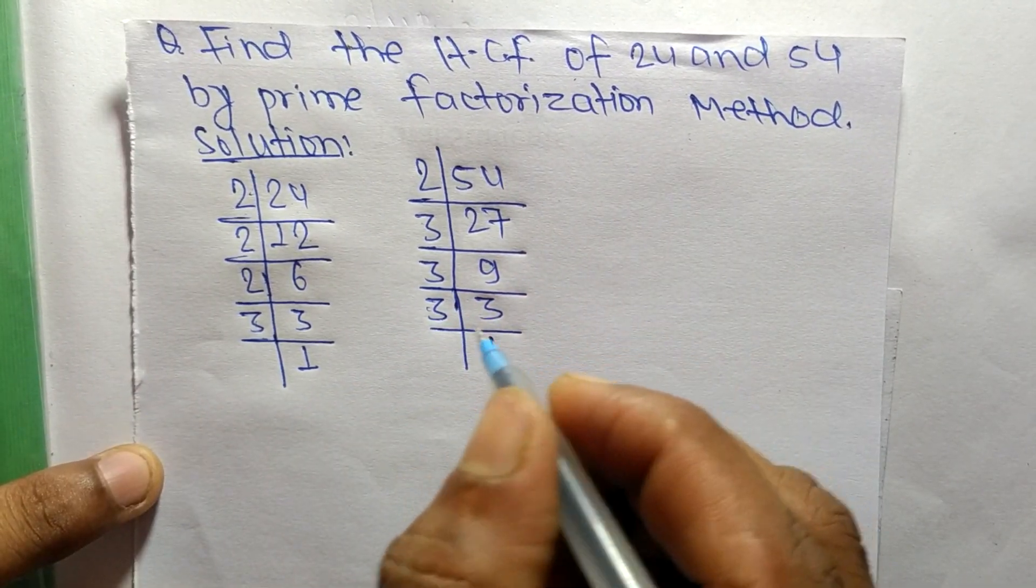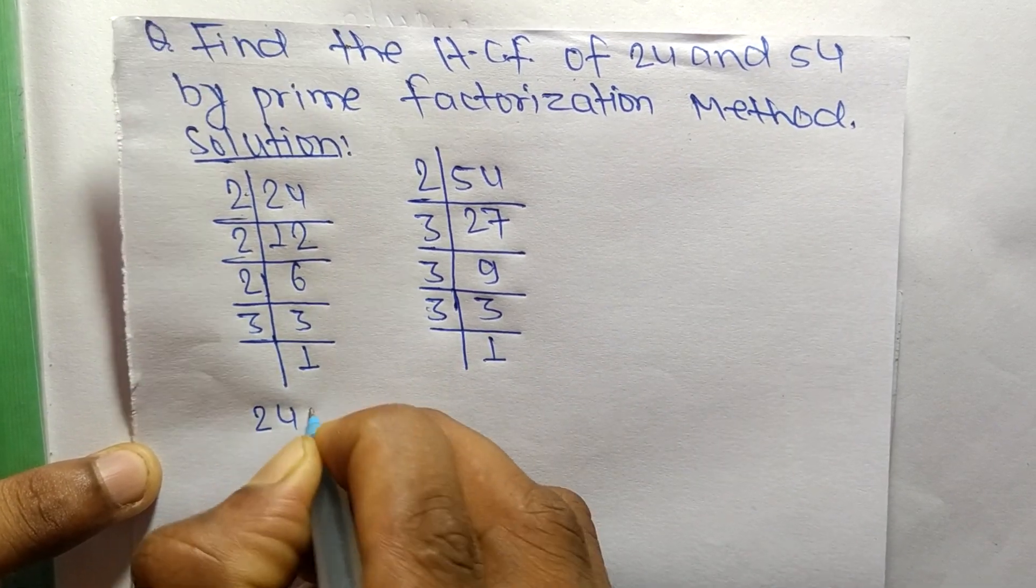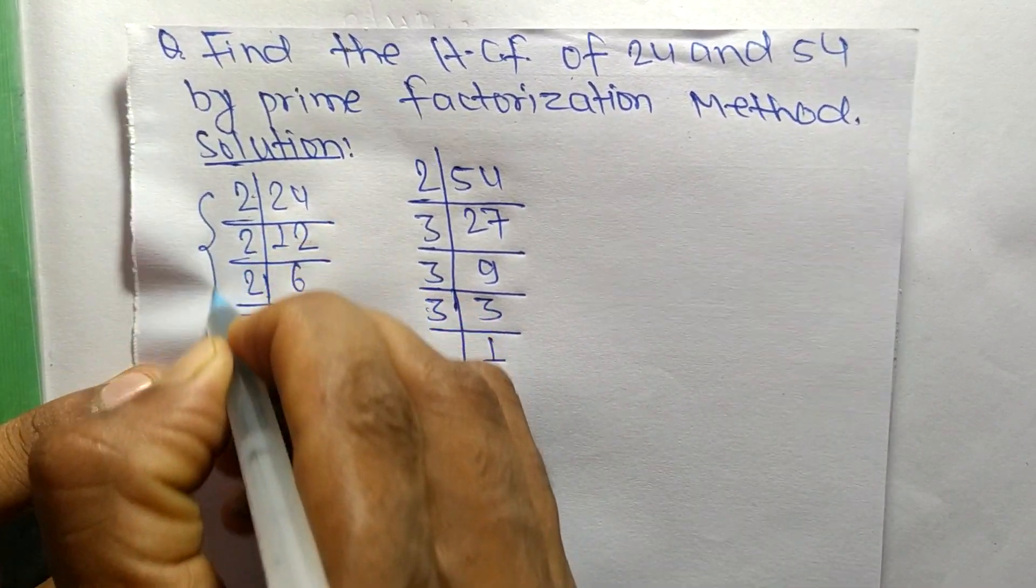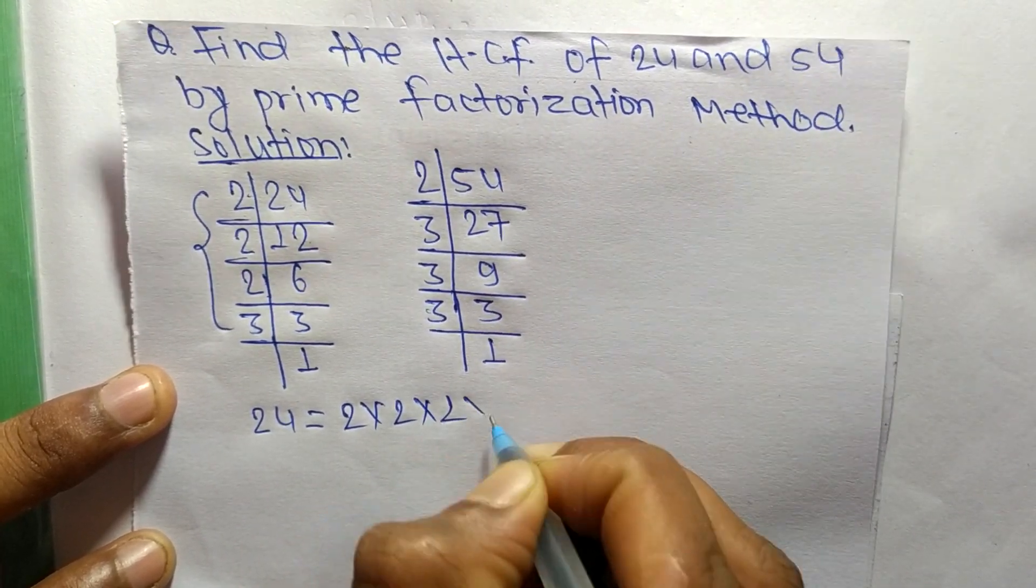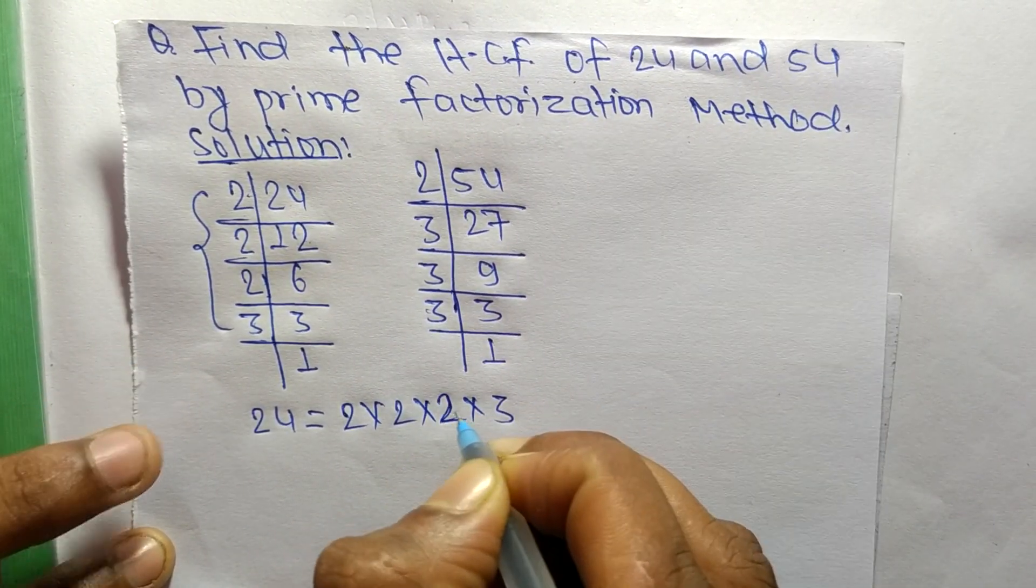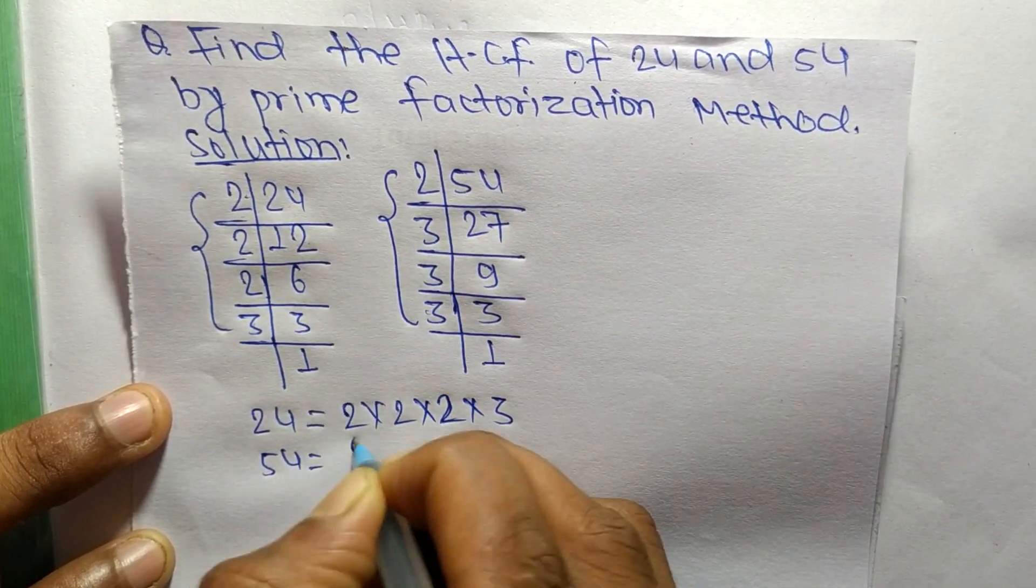So from these prime factors we can write 24 is equal to 2 times 2 times 2 times 3. Likewise, 54 is equal to 2 times 3 times 3 times 3.